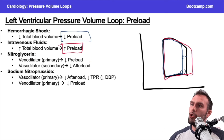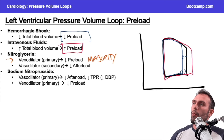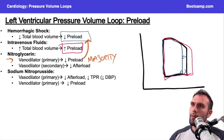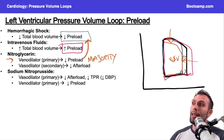The majority of nitroglycerin's effects are on the veins, and the venous side is primarily about preload. So we'd expect a lower end-diastolic volume — similar to the leftward shift we discussed. Because it also has some effect on afterload, we'd see a slight decrease in afterload too, so the peak pressure is a little lower. Overall, nitroglycerin causes a decrease in end-diastolic volume and a slight decrease in afterload, resulting in a decrease in stroke volume.